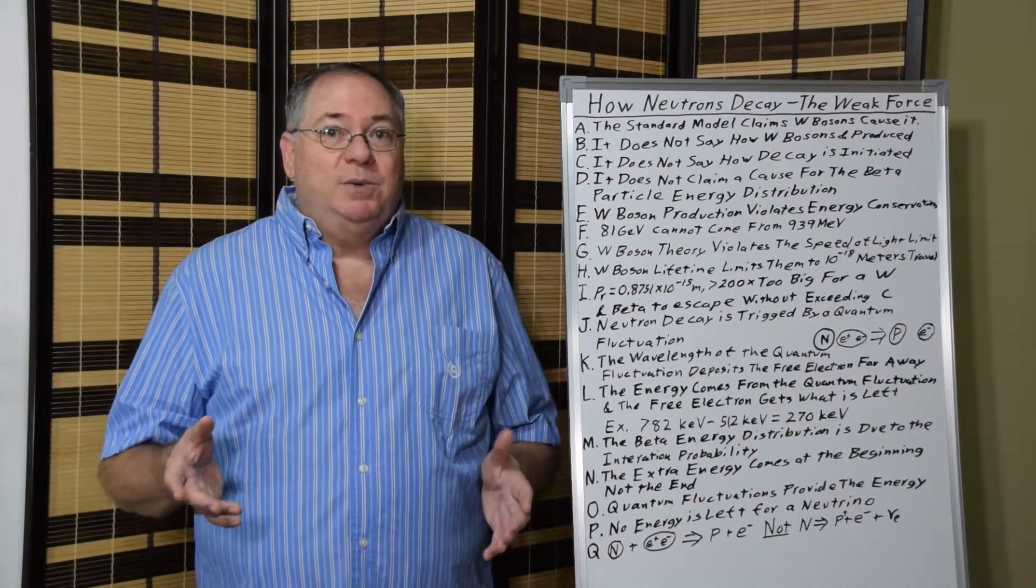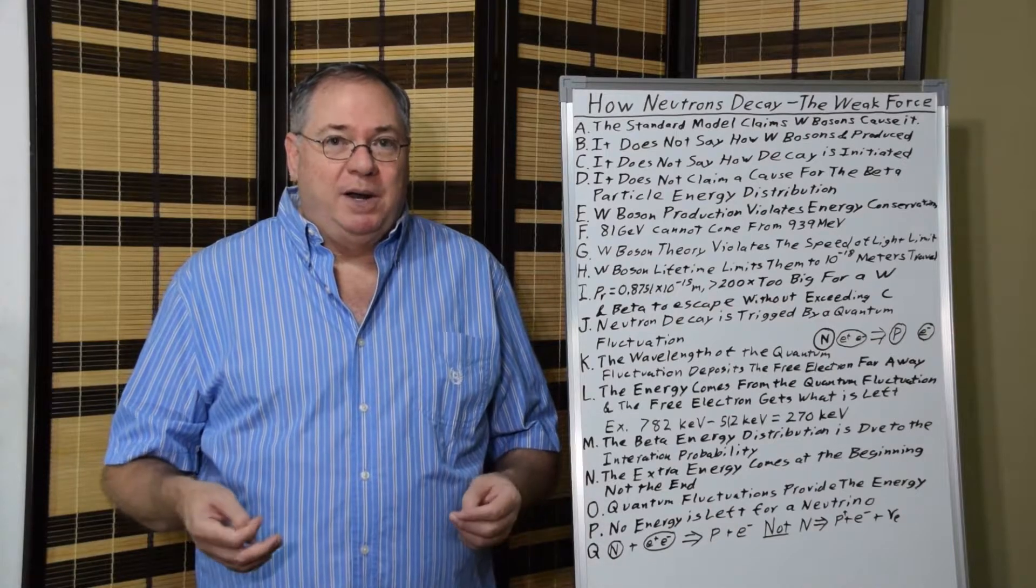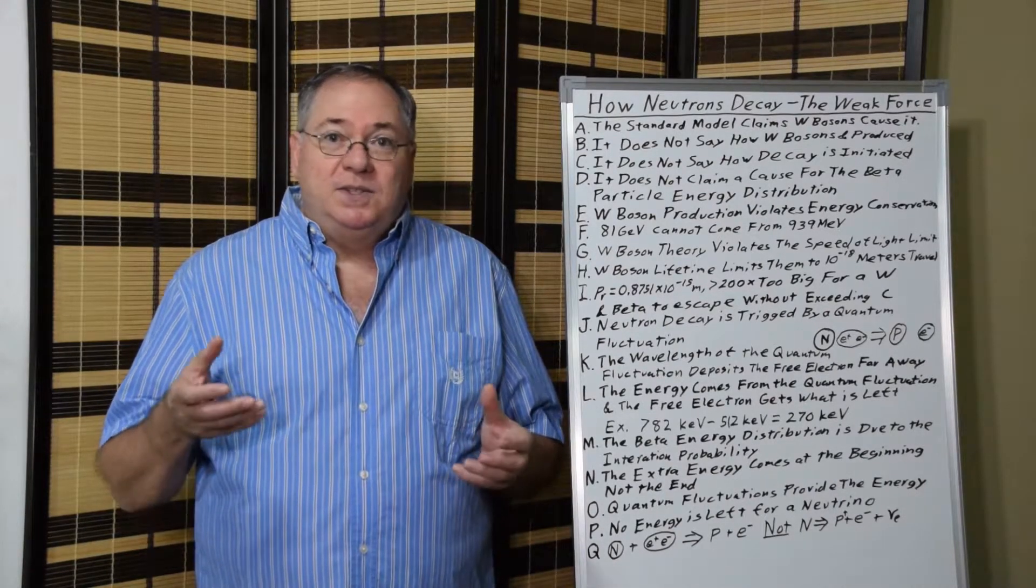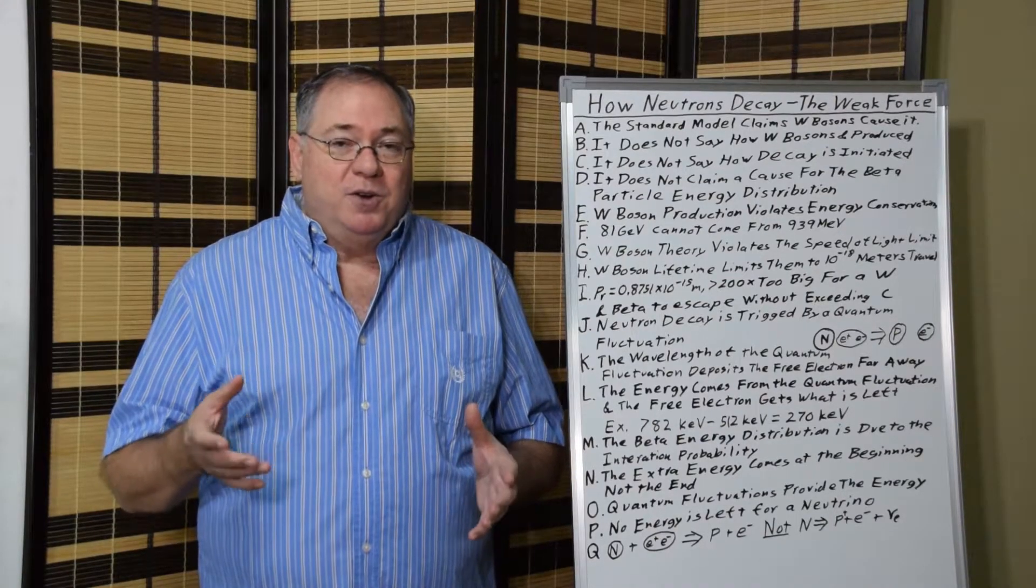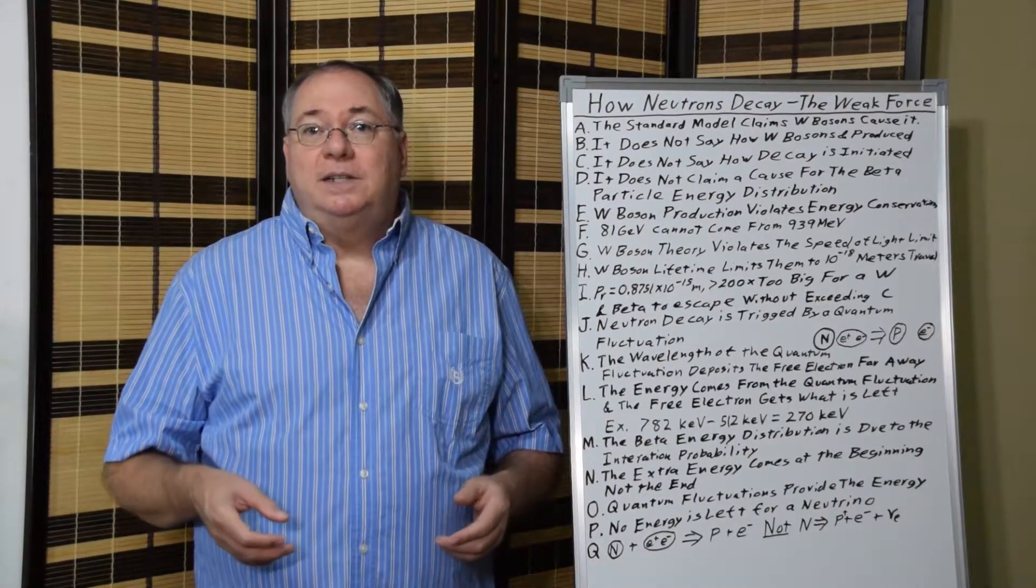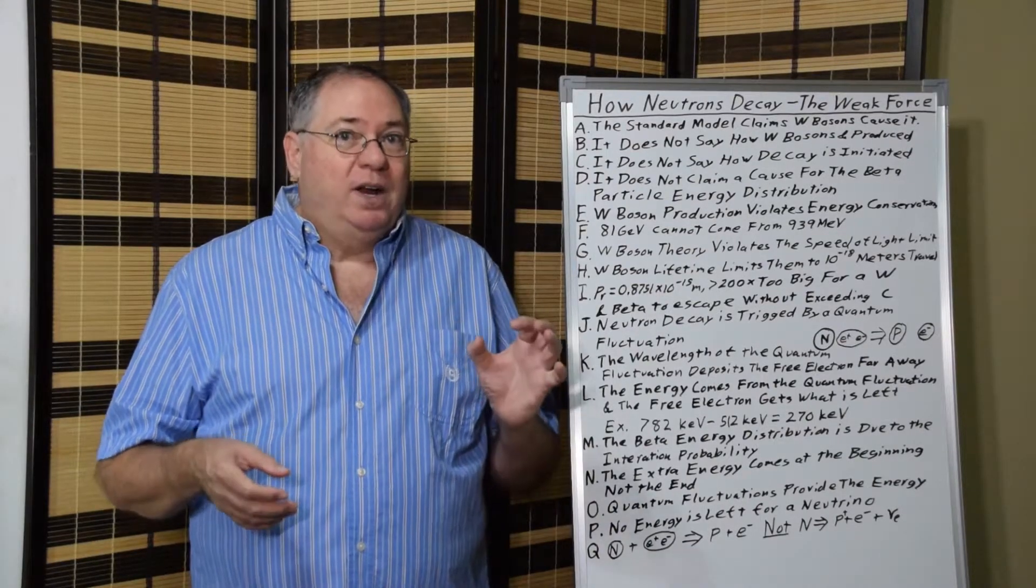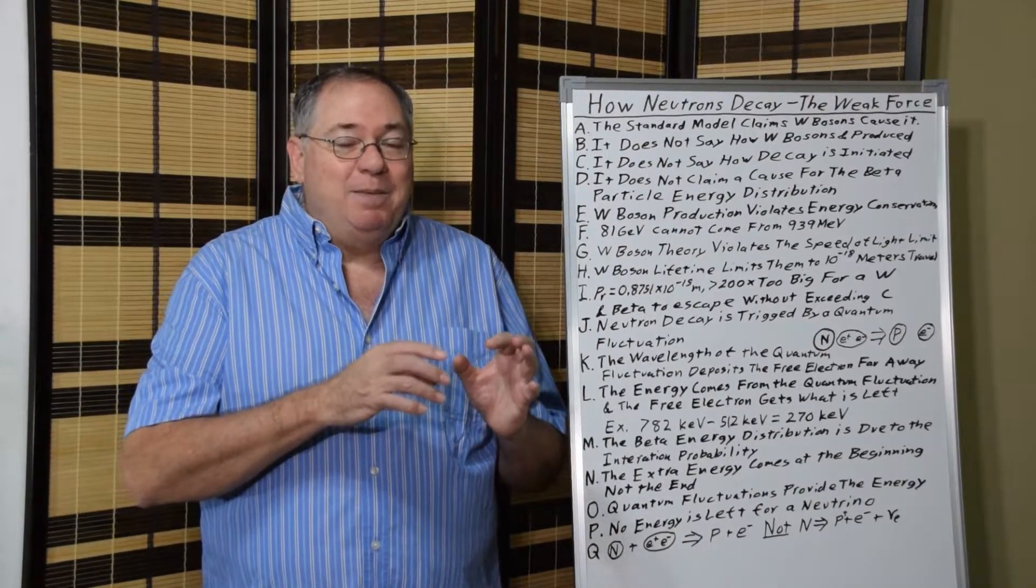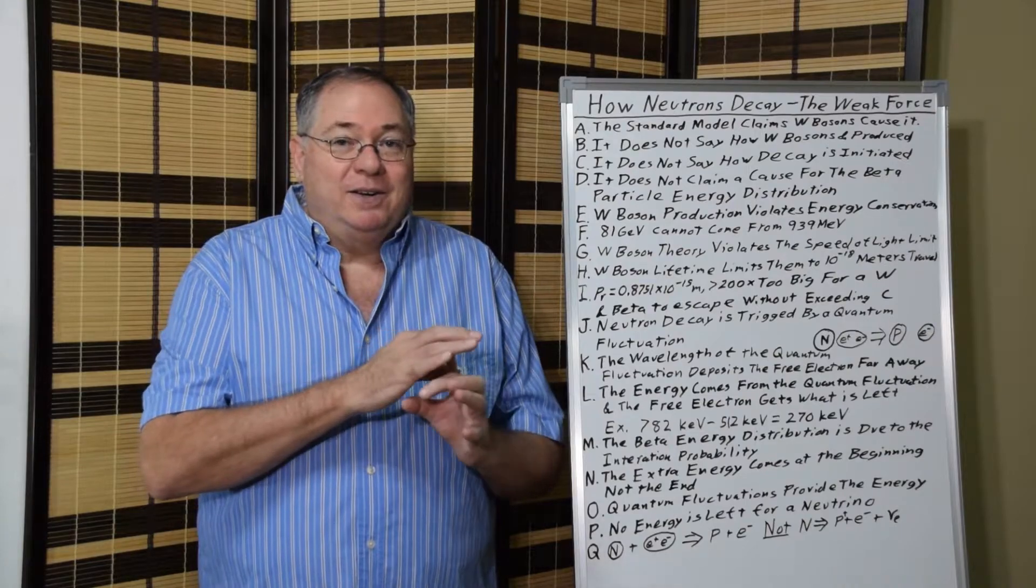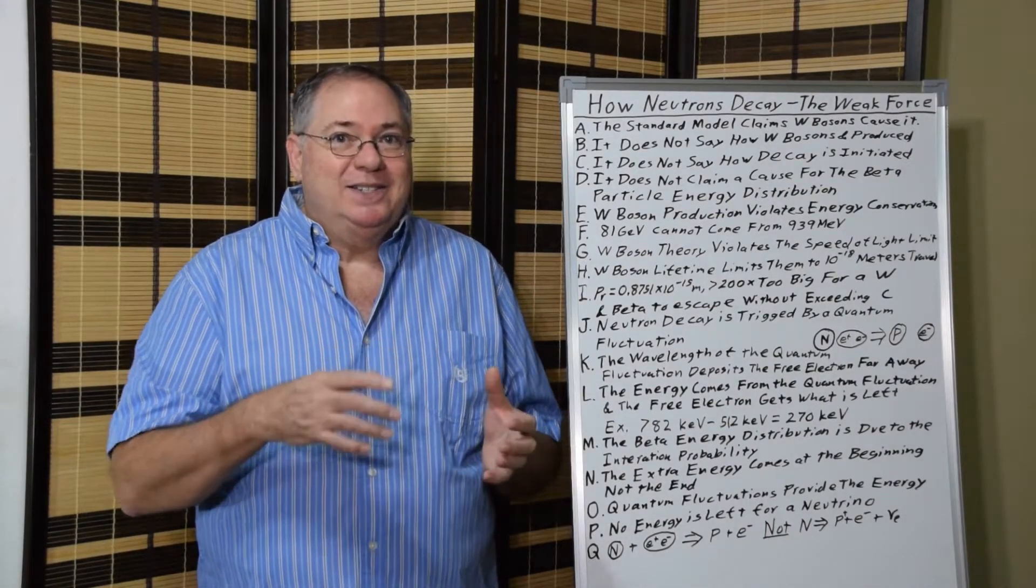Because quantum fluctuations exist. We know they exist because the experimental evidence is overwhelming. And the standard quantum fluctuation, the prototypical one, is an electron-positron pair. Well, if you can imagine a neutron and consider even if it's not exactly a proton and an electron that are co-located, it has something electron-like still inside of it.